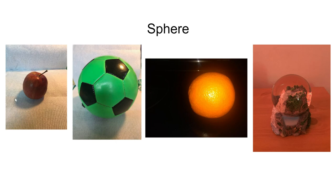So we have an apple as an example of a sphere, a soccer ball, an orange, and then this is a snow globe. The top of the snow globe is a sphere.